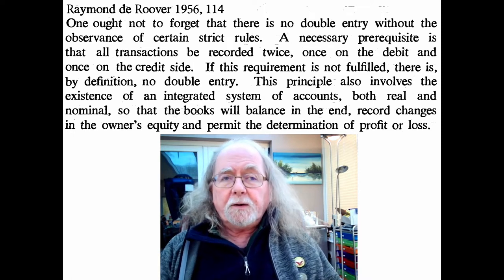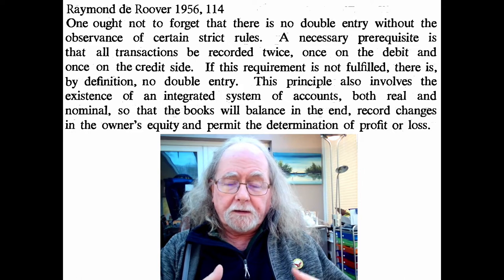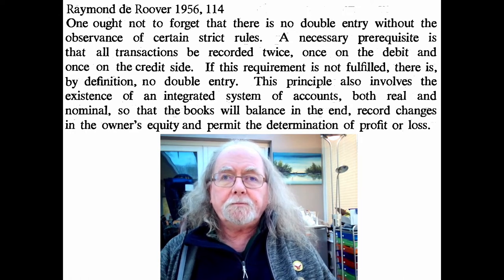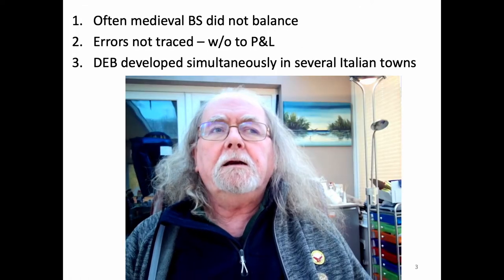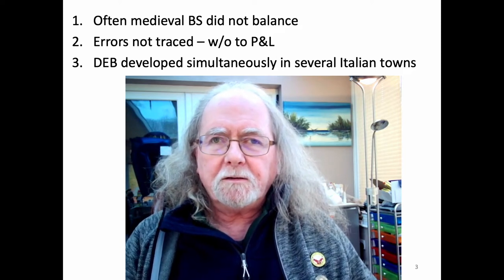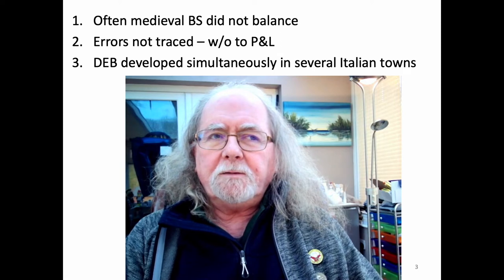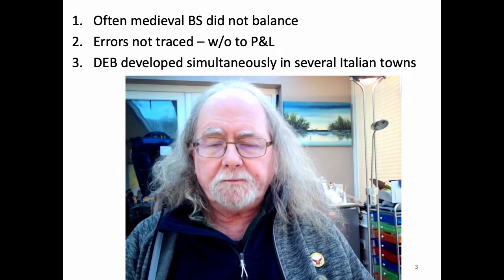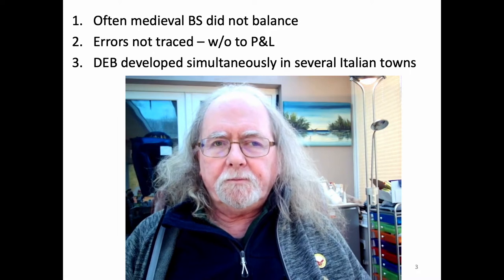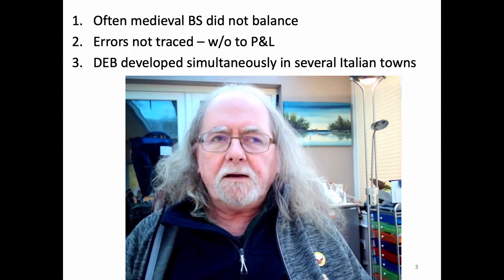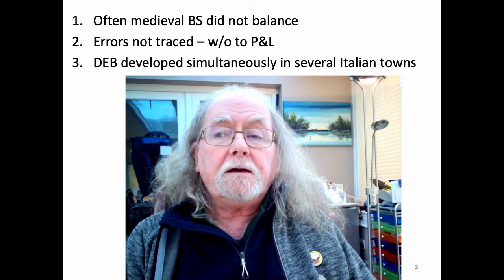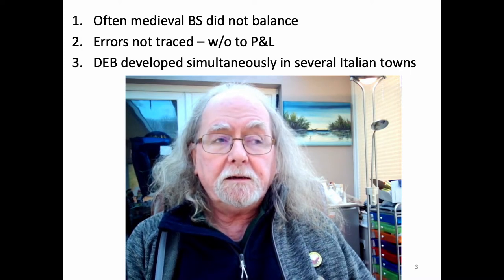If he had just said it requires duality, the history of accounting from the 1950s onwards would have been very different because people would have opened their minds. But this definition closes minds. He was renowned to say: often medieval balance sheets did not balance, errors not traced were written off to profit and loss, and double-entry bookkeeping developed simultaneously in several Italian towns. On the first point, he was relying on what he knew from the archives — he spent a lot of time looking at the archives of the Datini firm, from about 1364 to 1410.